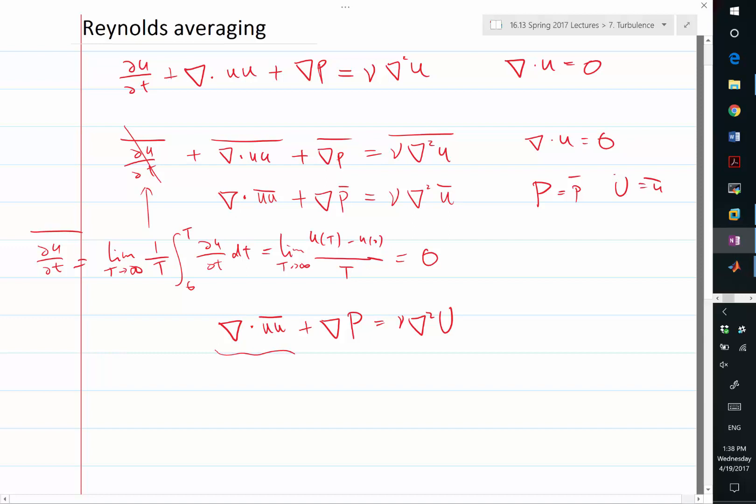Of course, we don't really know what, if we want to derive a governing equation for the big U and big P. And also we have, by averaging over this, we get divergence of U is equal to 0. So the mean velocity is also divergence free.